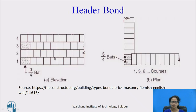Next we have the header bond. A three-quarter bat is used before starting the header in the header bond. This type of bond is used for a one-brick-thick wall, here of 18 cm thickness.